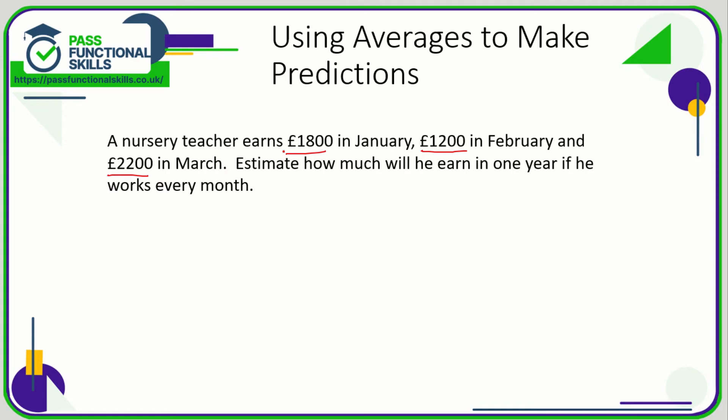So in three months, the mean is going to be £1800 plus £1200 plus £2200, which is £5200. So that is in three months, so his average or his mean per month is this divided by 3.